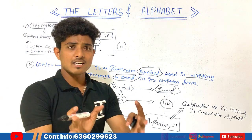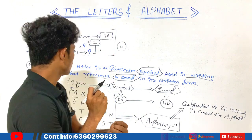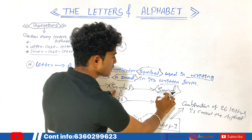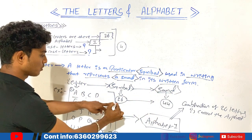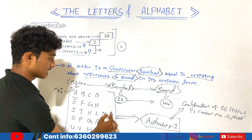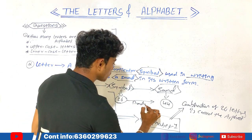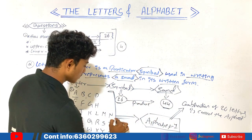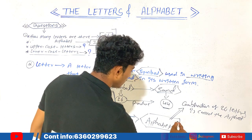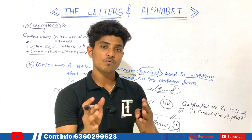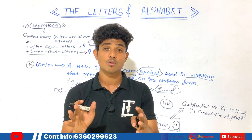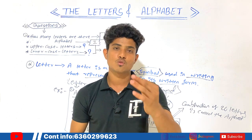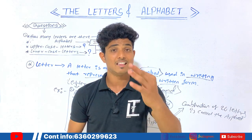A letter is nothing but a symbol which produces sound. We have a total of 26 symbols, which means 26 letters, and those 26 letters produce 44 sounds. Collectively, 26 letters are called the alphabet, which means we have only one alphabet. Never forget this — if somebody asks you how many alphabets there are, keep in mind that there is only one alphabet and 26 letters in the English language.